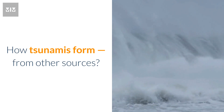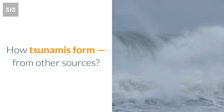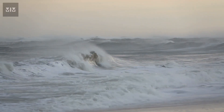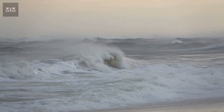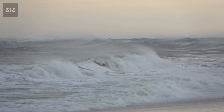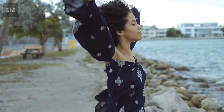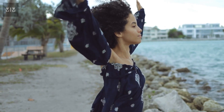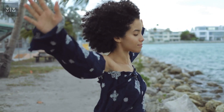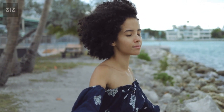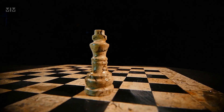How do tsunamis form from other sources? In rare cases, tsunamis can also be caused by landslides, volcano eruptions, and meteorites. In all cases the main principle is the same — a water mass is displaced and as it nears the shoreline it starts growing in height. However, the displacement mechanism differs.